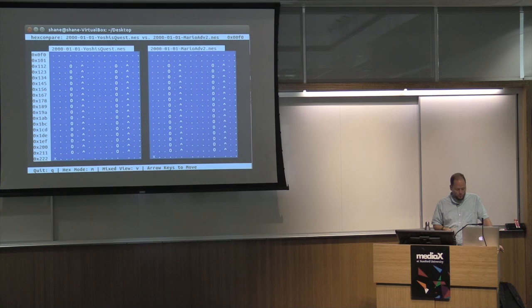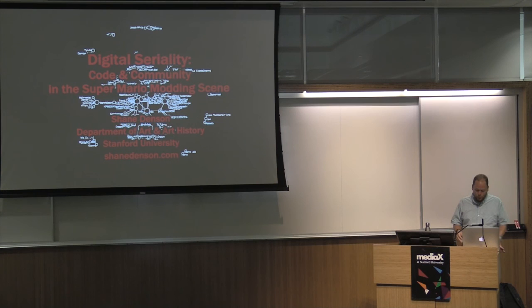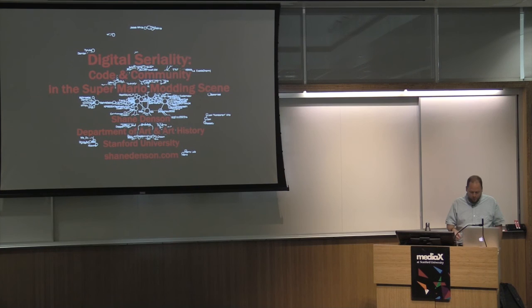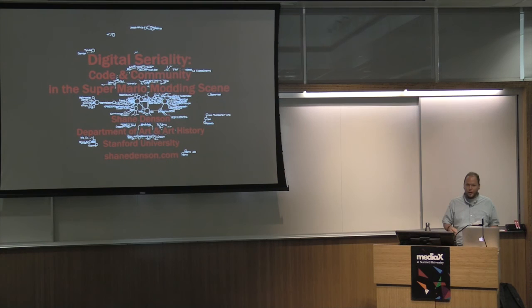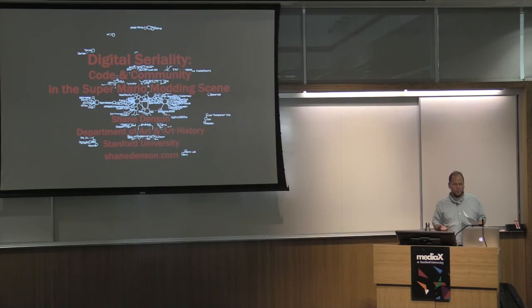This is really just the beginning of an encounter between critical code studies and a digital humanities approach to serialization processes. Ideally, the dataset would be expanded beyond just this one website, other online communities would be mined for their data, and more integrative tools would be developed for correlating social network graphs and diff maps—correlating community and code. A crowdsourced approach might be appropriate. Data and visualizations are available at shanedenson.com. The real work lies in building the right tools for the job; like digital seriality itself, this remains work in progress.